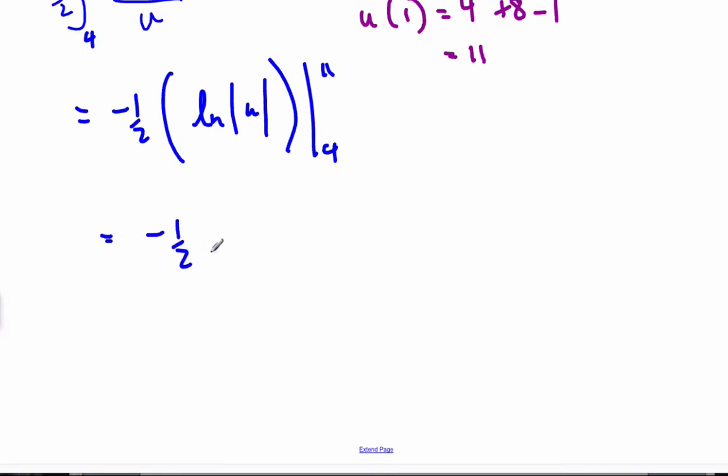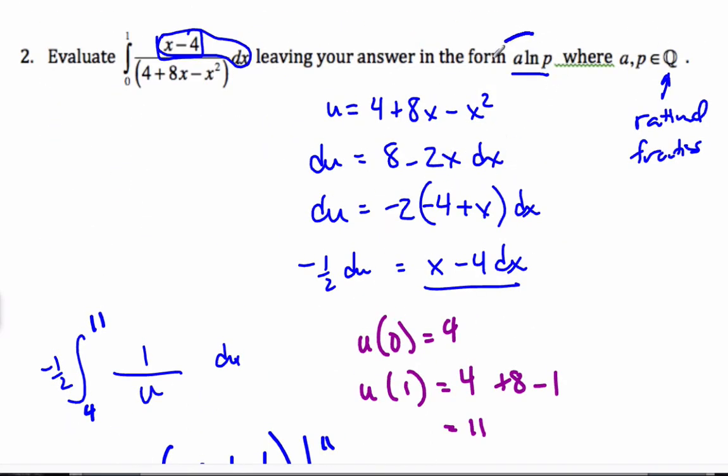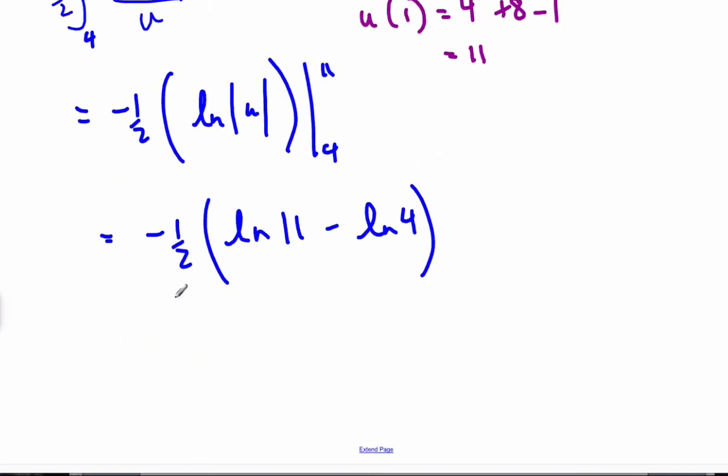Similarly, u as a function of x at 1 is going to be 4 plus 8 minus 1, which is 11. And so this upper limit is 11 in terms of u. And so now I can go straight ahead and integrate this. So I have negative 1 half times the natural logarithm of u, and that's going to be from 4 to 11. I'm doing my rules for definite integrals. That's the natural logarithm of 11 minus the natural logarithm of 4.